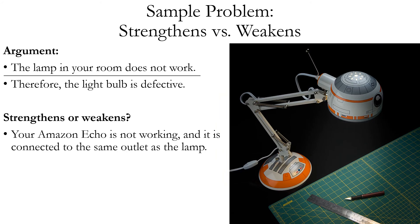Let's look at another type of sample problem where we're given an argument and a new piece of information, and we decide whether it strengthens or weakens the argument — interpreting the new information as an additional premise. Argument: the lamp in your room does not work, therefore the light bulb is defective. New information: your Amazon Echo is not working, and it is connected to the same outlet as the lamp. Does that strengthen or weaken the argument?